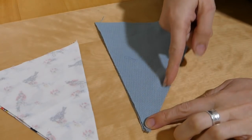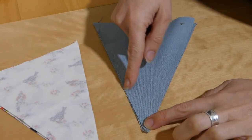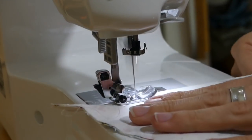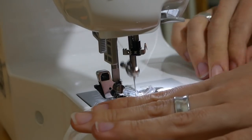Now sew the long sides of the triangle at one fourth inch seam. If you want, you can pin the two pieces together before sewing. Leave the top open for turning later.